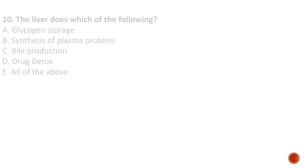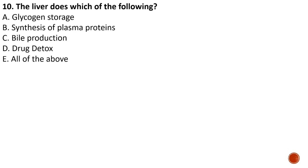Question number ten: the liver does which of the following? A) glycogen storage, B) synthesis of plasma proteins, C) bile production, D) drug detoxification. All of these are correct functions of the liver — glycogen storage, synthesis of plasma proteins such as albumin, bile production, and drug detoxification — so the answer is E, all of the above.